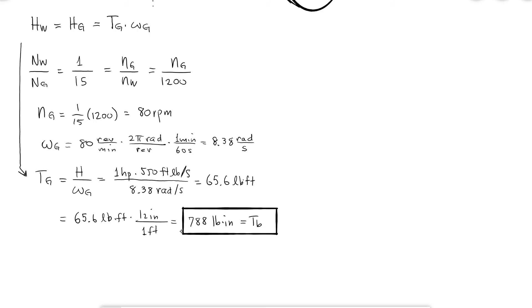That answers the first question. This torque is generated by the tangential component of the interaction force from the worm to the gear. To find this tangential force — which allows me to calculate all the other components and the reaction forces at the bearings — I need the radius of the gear, which was not given.